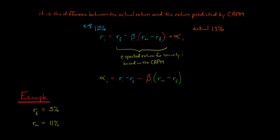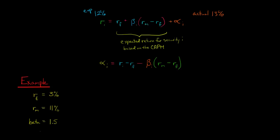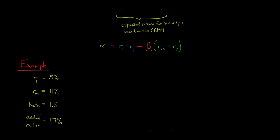We've got a risk-free rate of return of 3%, and then we have an expected rate of return for the market of 11%, and a beta—let's say we're talking about a particular stock and it has a beta of 1.5. That's a measure of systematic risk. The actual rate of return turns out to be 17%, and the question is, what is alpha?